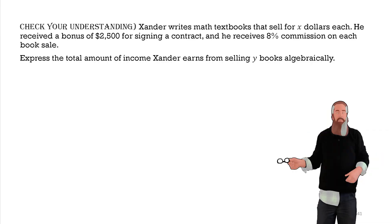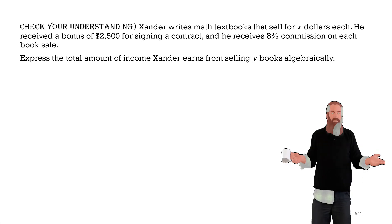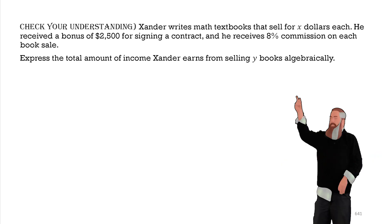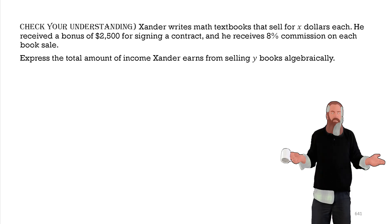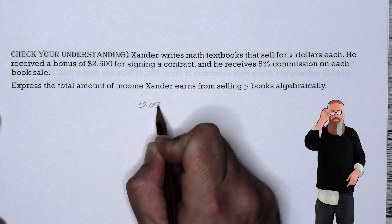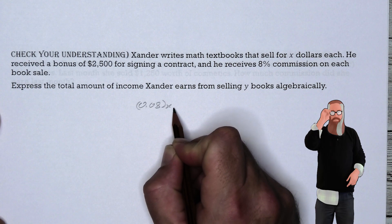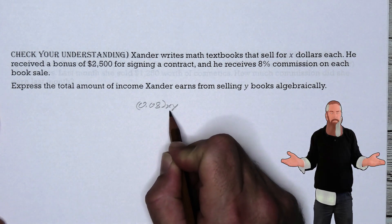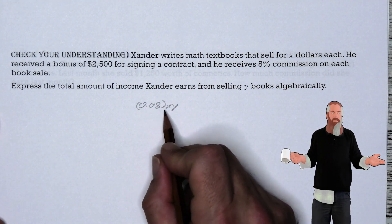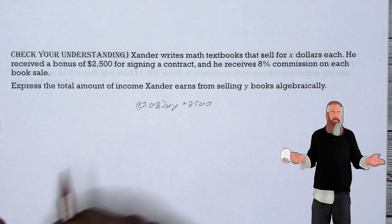Let's check our understanding. Zander writes math textbooks that sell for X dollars each. He receives a bonus of $2,500 for signing the contract and 8% commission on each book sale. Express the total income Zander earned from selling Y books algebraically. The 8% commission is 0.08 times the sale price X per book. If he sold Y books, the total is 0.08XY, plus the $2,500 signing bonus.